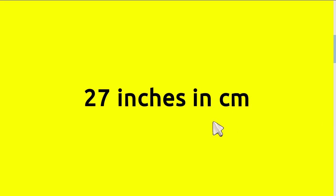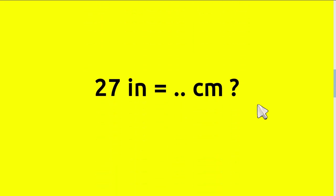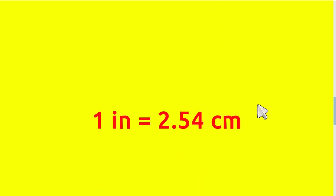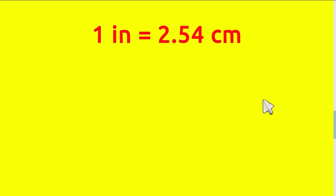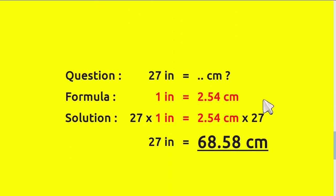Okay, today we are going to convert 27 inches to centimeters. So the question is: 27 inches equals how many centimeters? And this is the formula that we will use: 1 inch equals 2.54 centimeters.